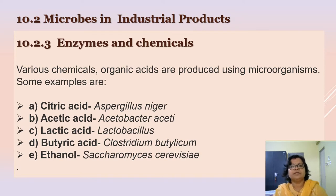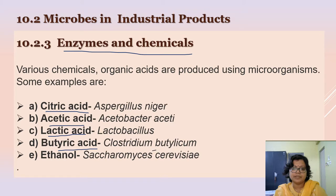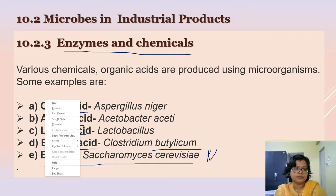Microbes are used in industrial production of chemicals and enzymes. Organic acids produced from microbes include: citric acid from Aspergillus niger; acetic acid from Acetobacter aceti; lactic acid from Lactobacillus; butyric acid from Clostridium butylicum; and ethanol from Saccharomyces cerevisiae, which is used in the brewery and bakery industries.